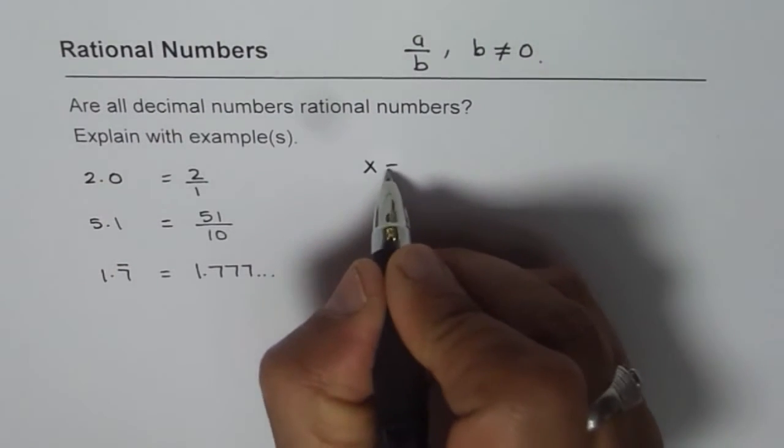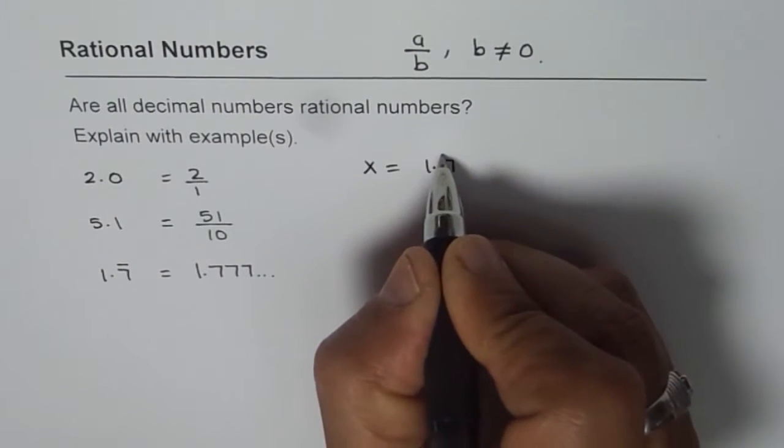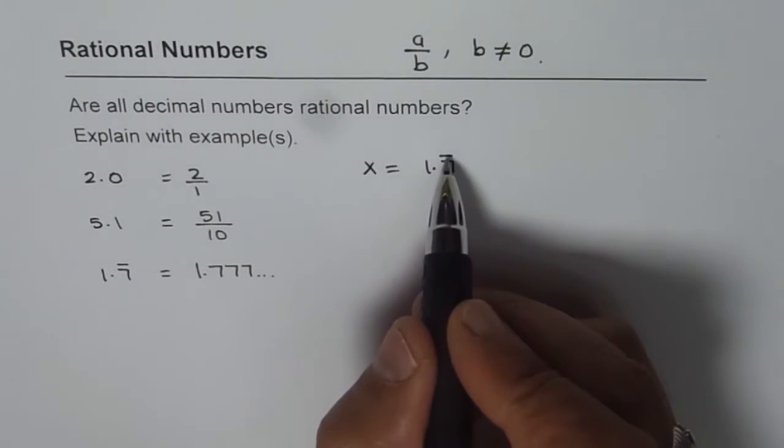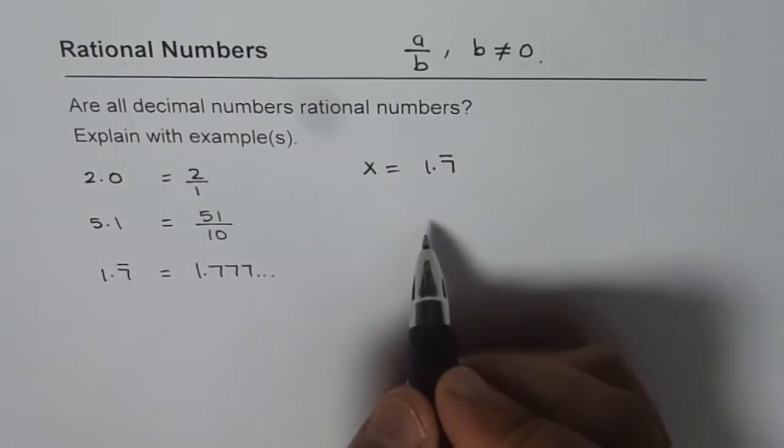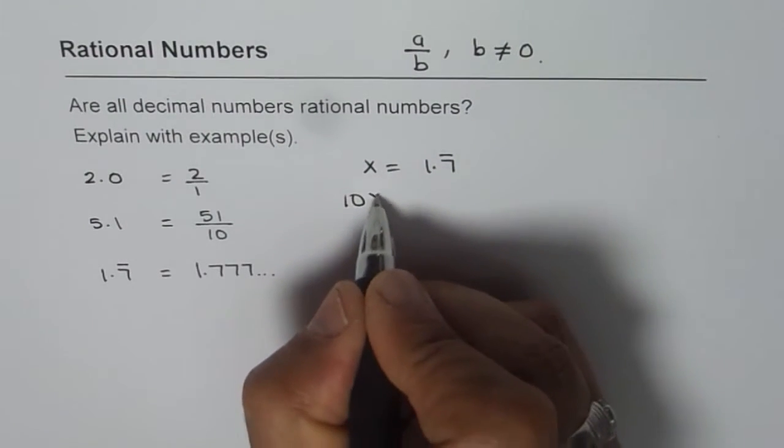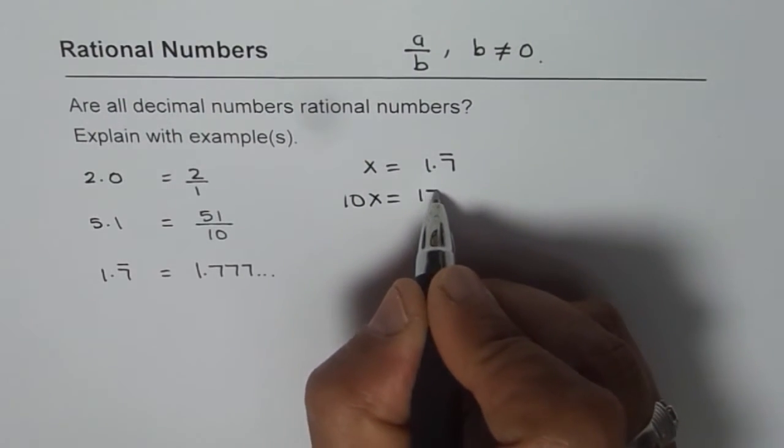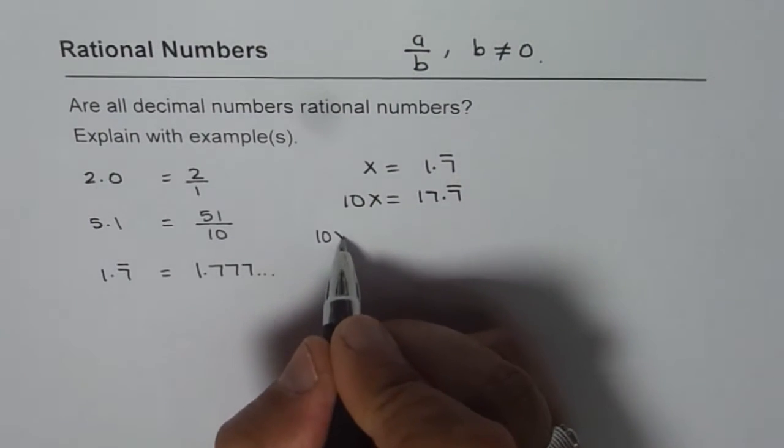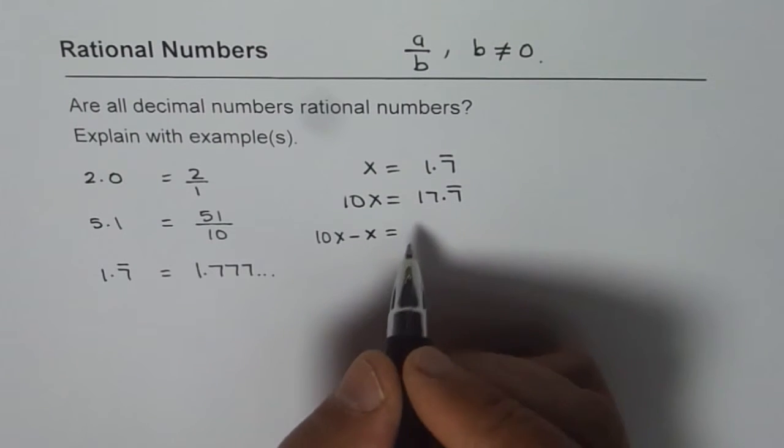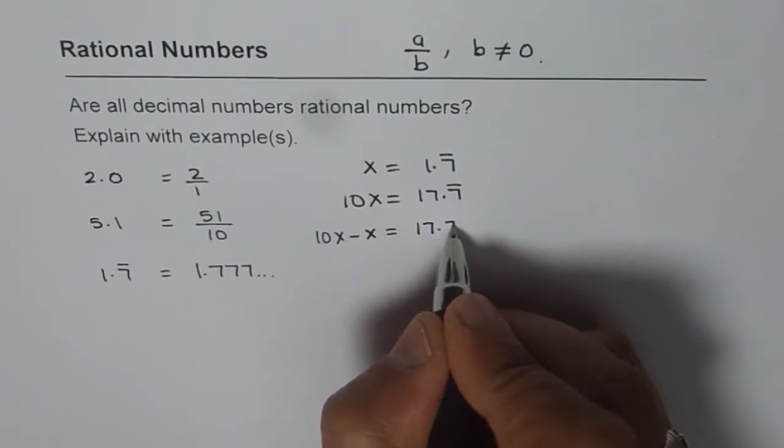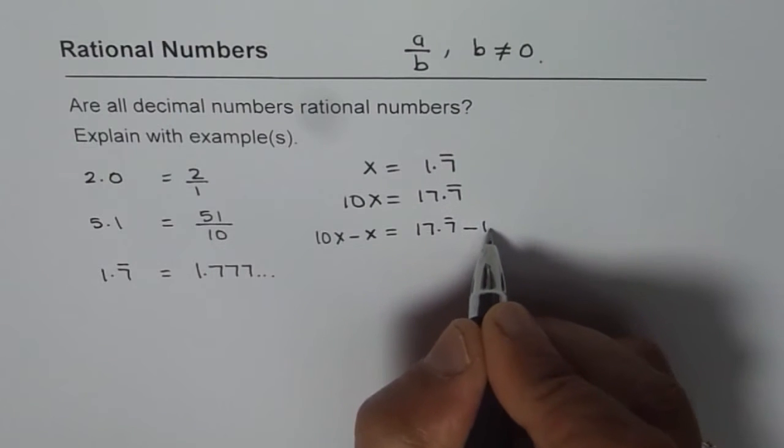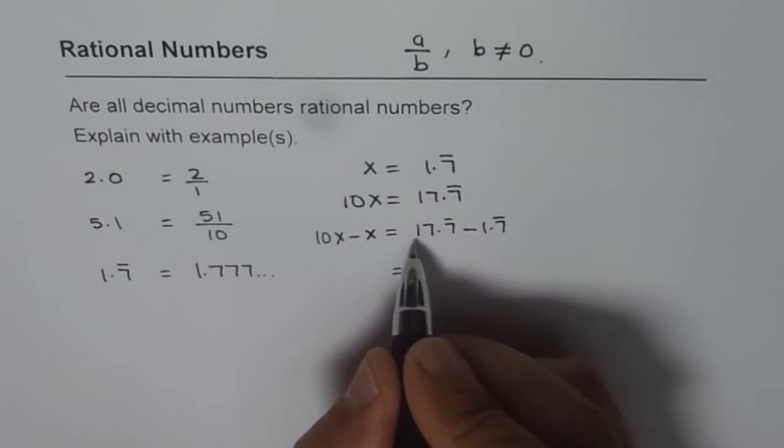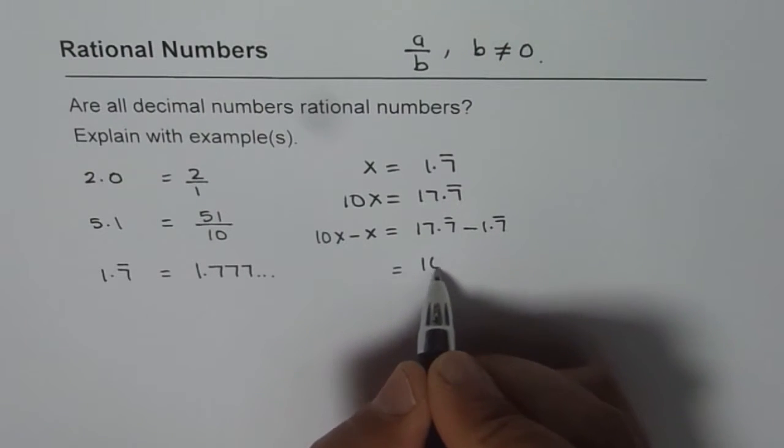Let x equals 1.7 recurring. So that bar on the top indicates that 7 repeats. So what is 10 times x? 10 times x will be 17.7 recurring. And how about 10 times x minus x? That will be 17.7 recurring minus 1.7 recurring. Which gives us 17 minus 1 as 16.